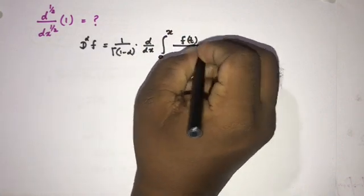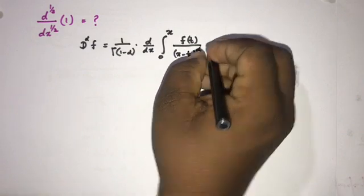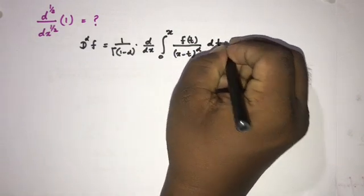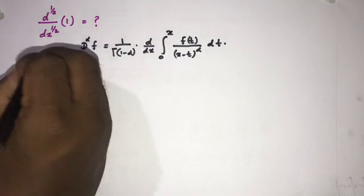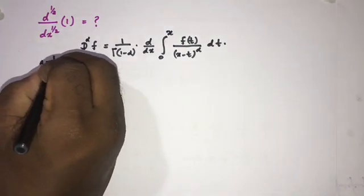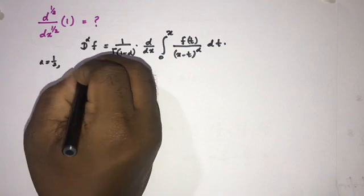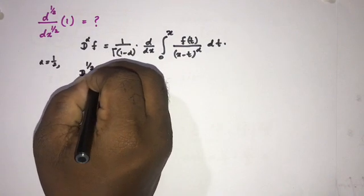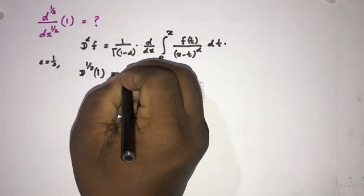t over x minus t to the alpha d t. Now we need the half derivative of 1, so alpha is equal to 1 half. We can write d 1 half of 1, or we can write this